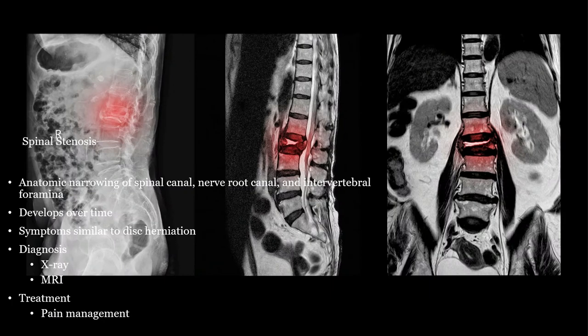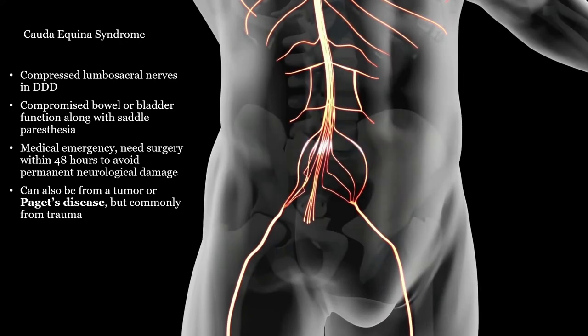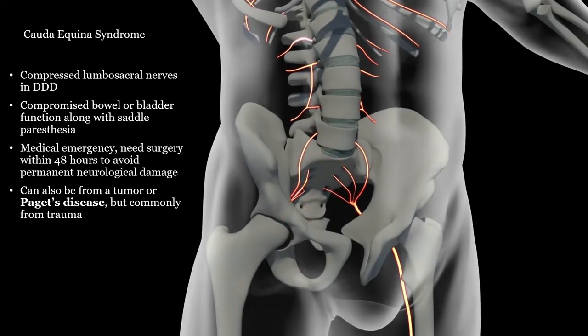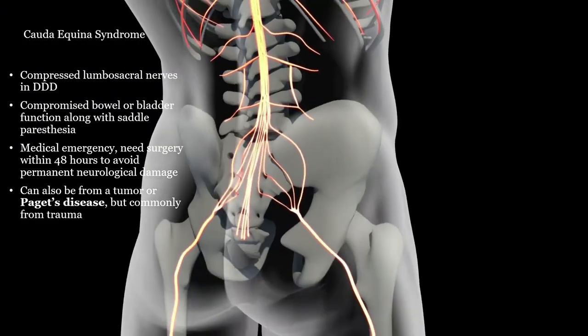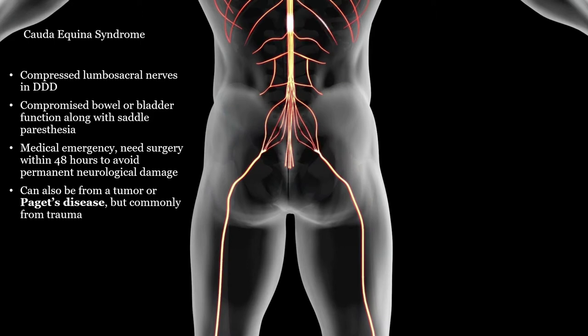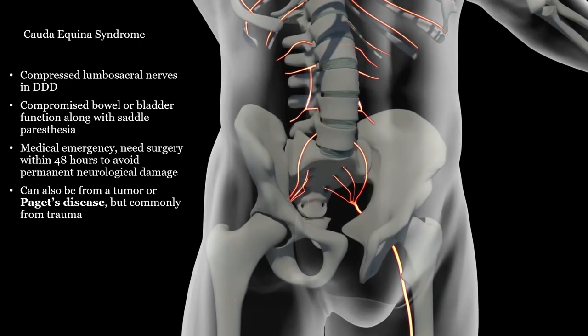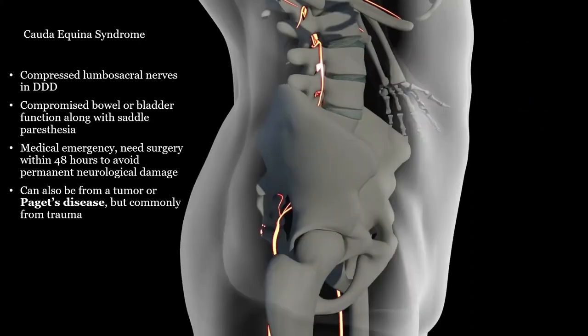Spinal stenosis is a narrowing of the space of the spinal cord that can lead to serious pain or neurological deficits. Cauda equina syndrome is a surgical emergency; the patient needs surgical intervention within 48 hours to prevent permanent damage to the spine. This can come about slowly from DDD or from a tumor, but most commonly comes from trauma like motor vehicle accidents. Patients will have bladder and bowel incontinence along with possible saddle paresthesia — loss of feeling in the areas where the skin would normally touch a saddle if riding a horse.